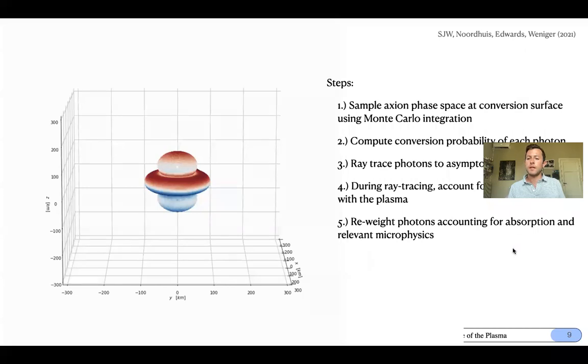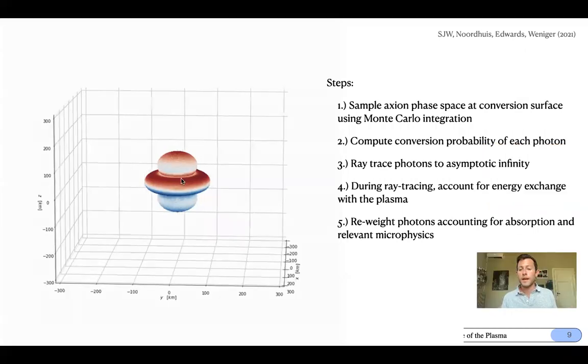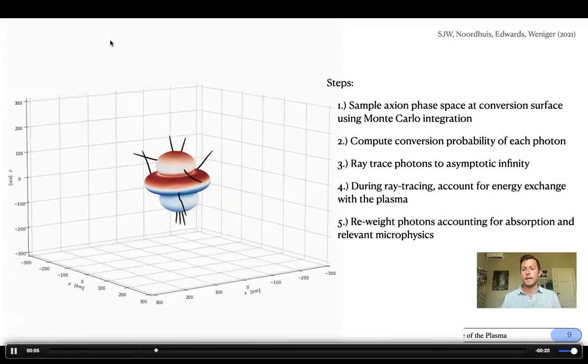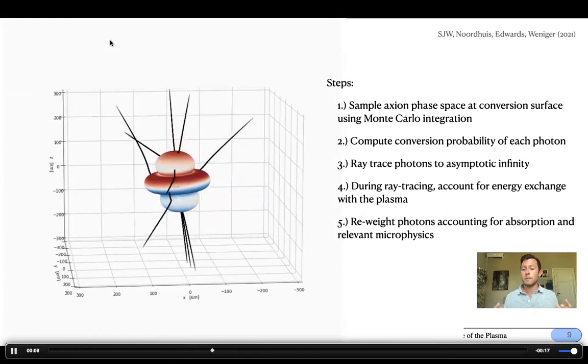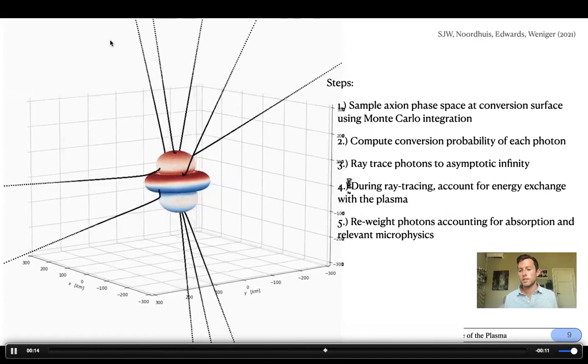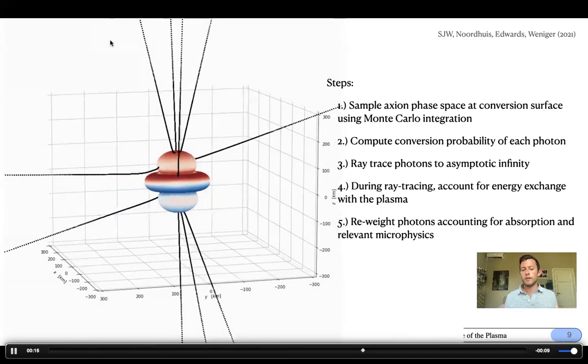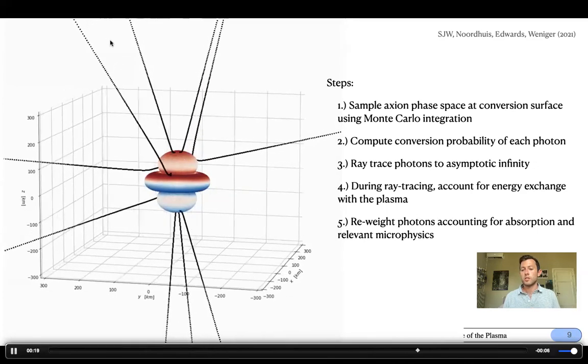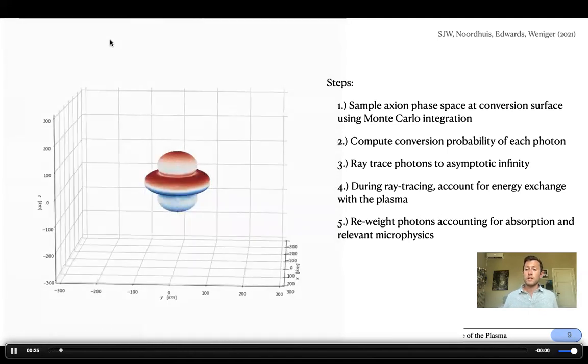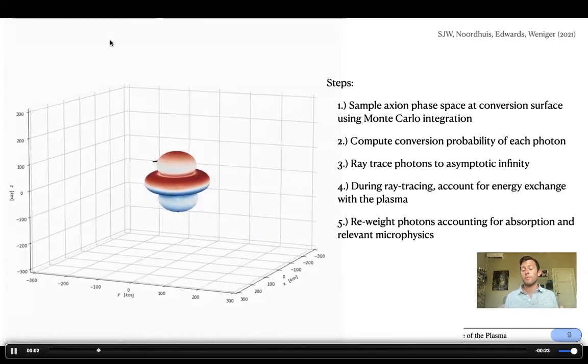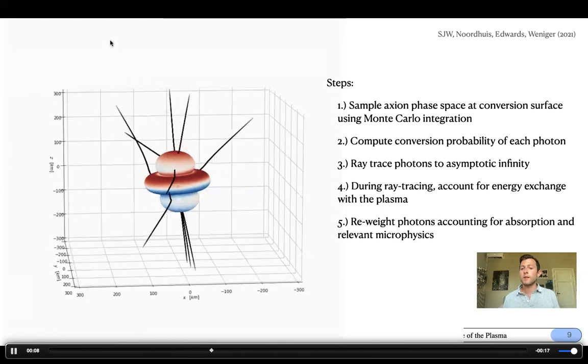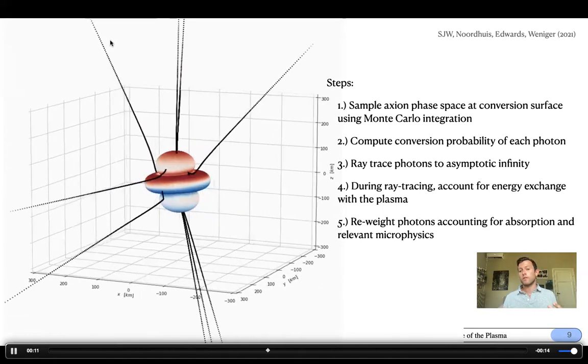So let me discuss our process for dealing with this problem while I play an animation of our numerical code that we've developed to deal with all of these issues. The first issue we have is what does the axion phase space look like at the resonant conversion surface? In the past, people have made a number of approximations based on the geometry of the axion phase space, for example, by assuming all axions travel radially outward, which is not the case. And this is important because the conversion probability is very sensitive to the axion velocity at that surface, at the conversion surface itself. So we deal with this by doing a Monte Carlo integration over the axion phase space directly at the conversion surface.